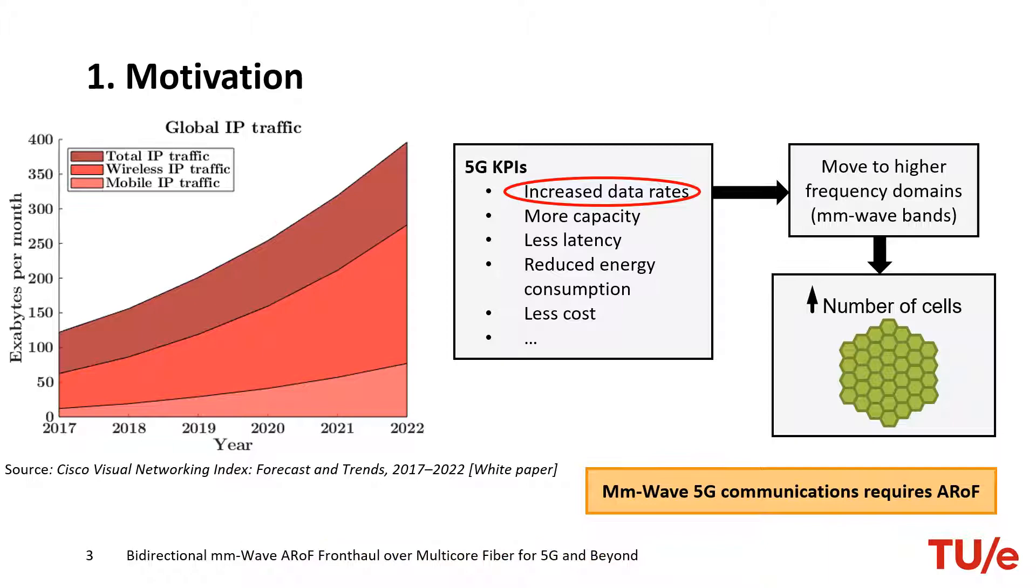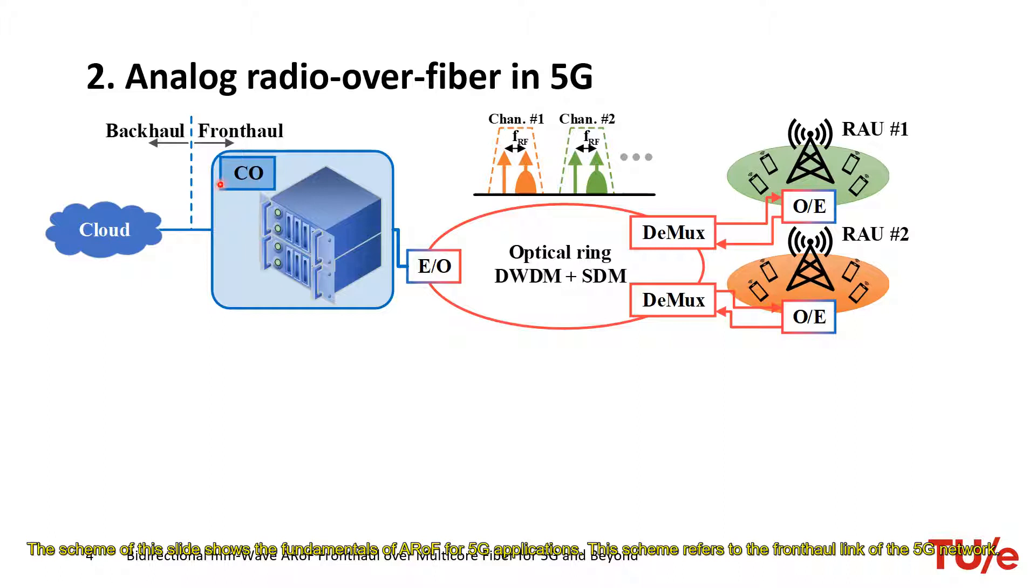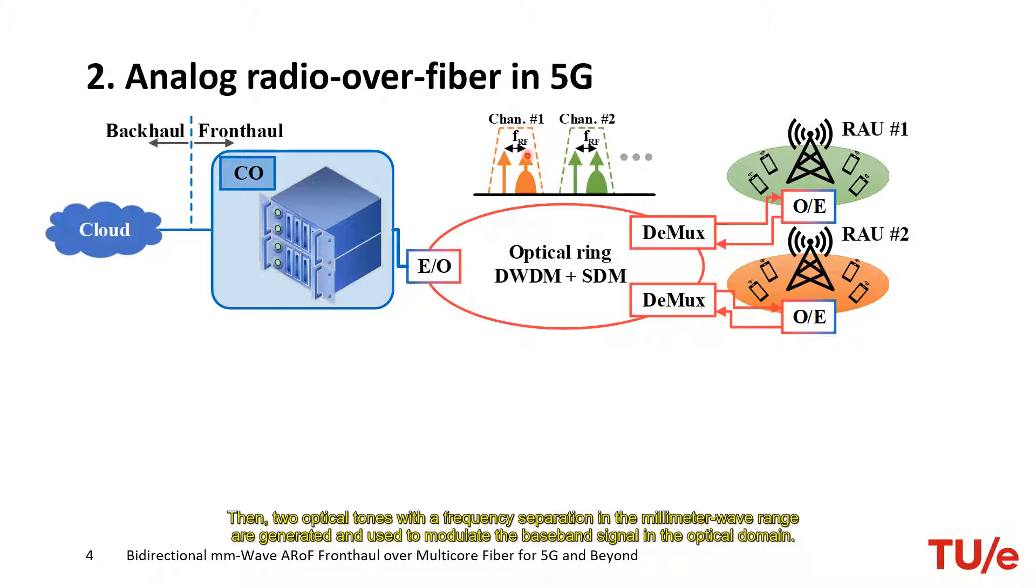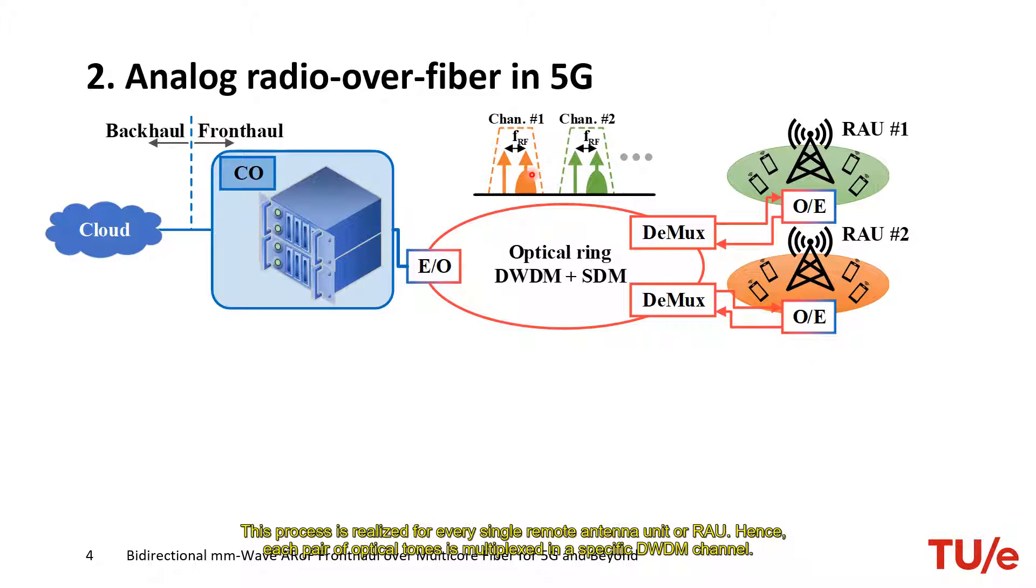The scheme of this slide shows the fundamental of RoF for fronthaul application. This scheme refers to the front haul link of the RoF network. First, in the central office, the baseband signals are generated. Then, two optical tones with a frequency separation in the millimeter wave range are generated and used to modulate the baseband signal in the optical domain. This process is repeated for every single remote antenna unit or RAU. Hence, each pair of optical tones is multiplexed in a specific DWDM channel. After the multiplexing process, the optical signals are launched into an optical ring that is interconnected to the RAUs of the front haul coverage area.